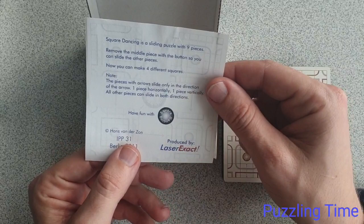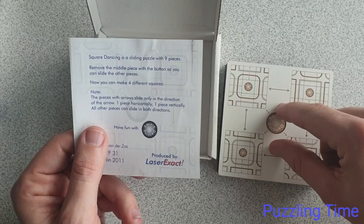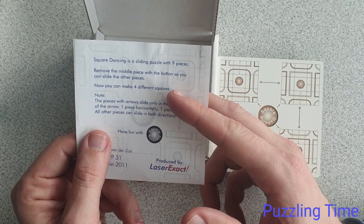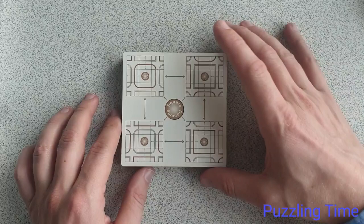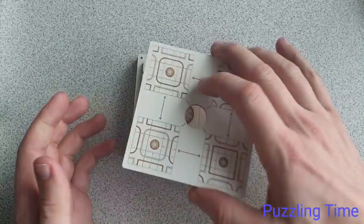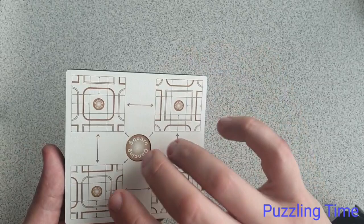You can now make four different squares. Note that pieces with arrows only slide in the direction shown, so we put that aside. It's a really nicely made puzzle, it's got a lid on it and that lid actually has little magnets in it as well so it snaps on nicely. Very nice laser cut wood, very nice puzzle.